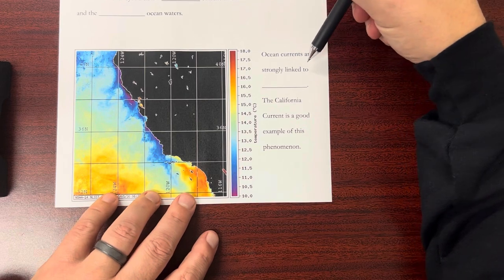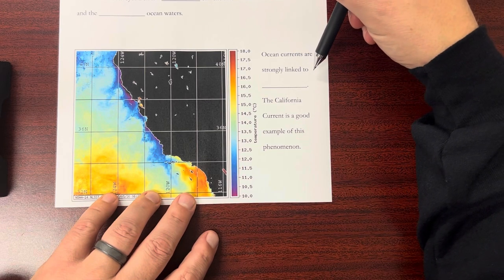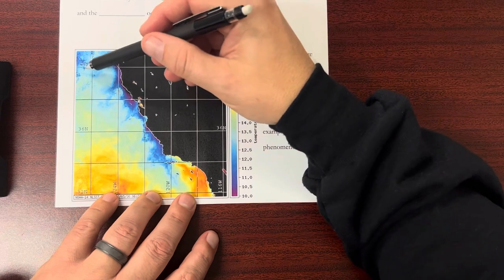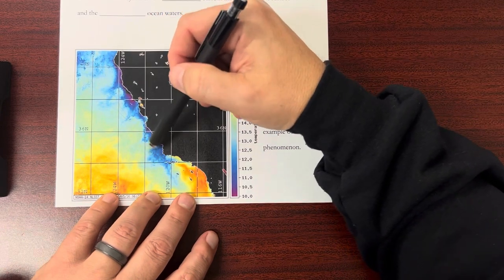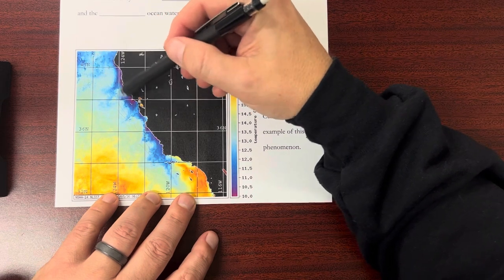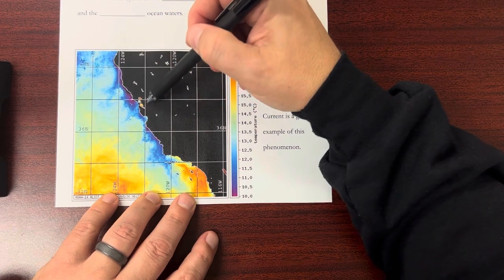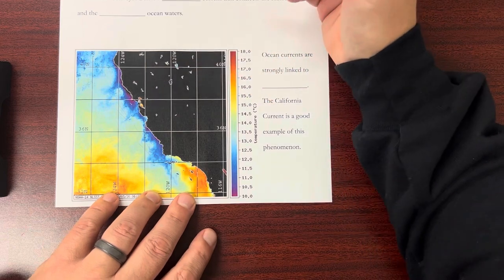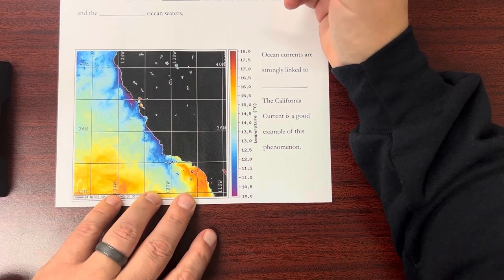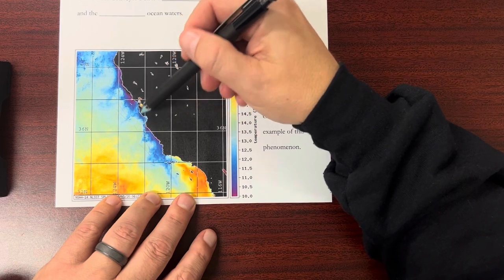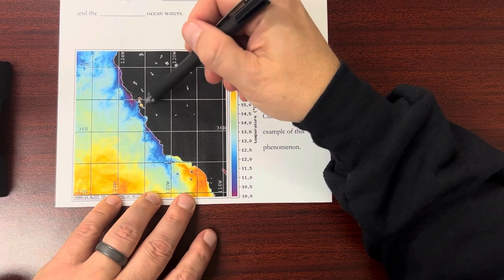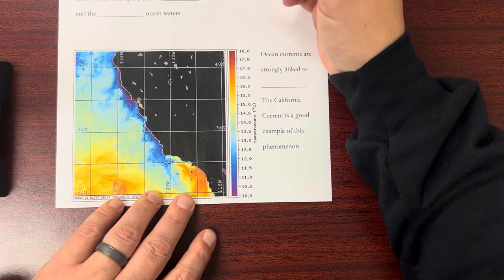Ocean currents are strongly linked to climate. Now if you notice the California current is cold and it comes down the coast here and it travels this way. It's that cold current that gives San Francisco its cold Mediterranean climate. It's almost exclusively from this cold current coming down that really influences San Francisco's climate.